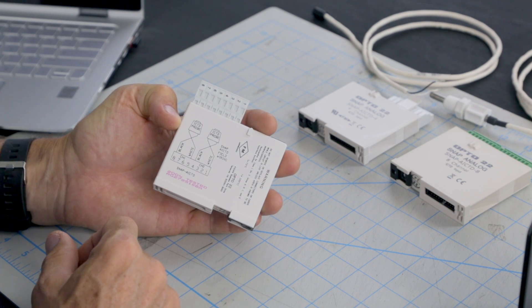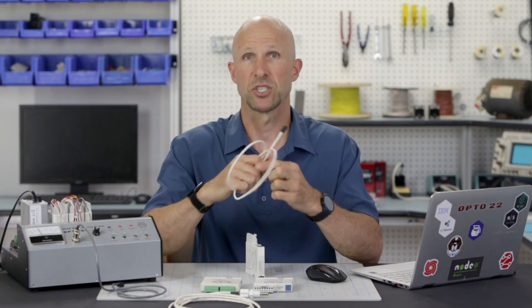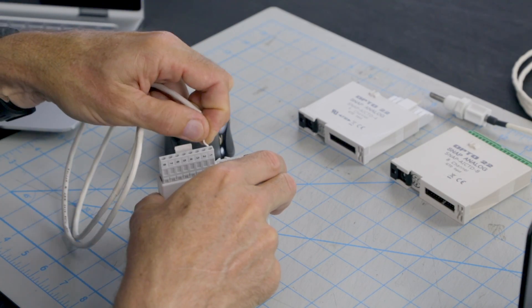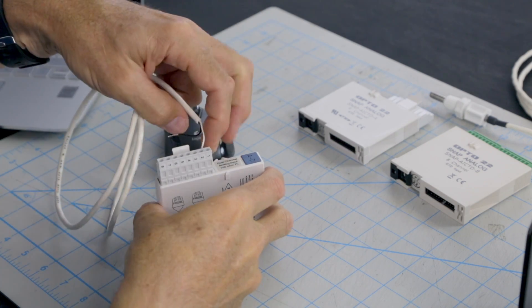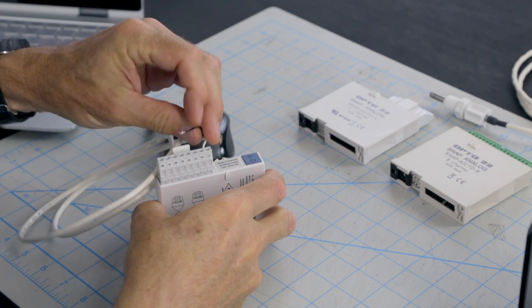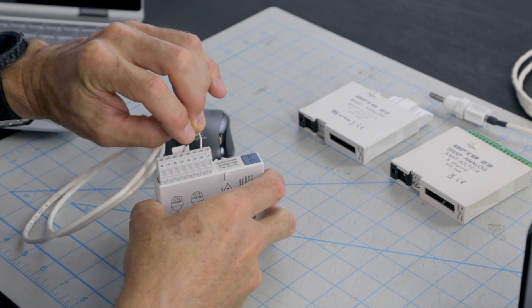There's only two wires, so for this two-channel SNAP-AICTD module, simply connect the white wire to terminal one and the black wire to terminal four.